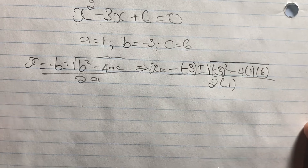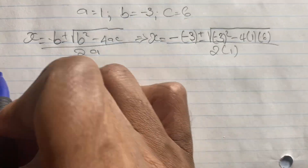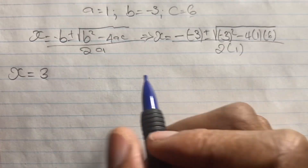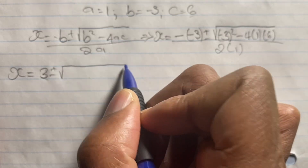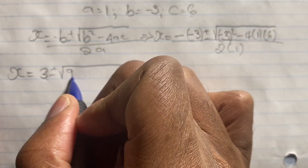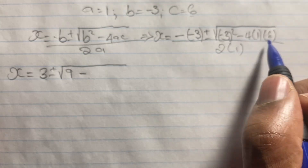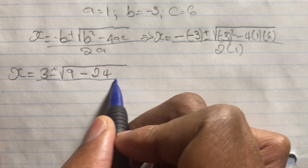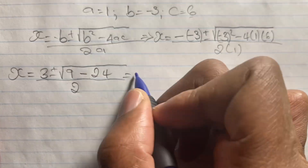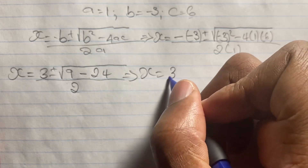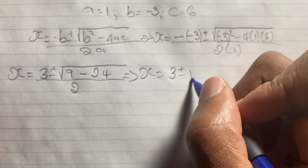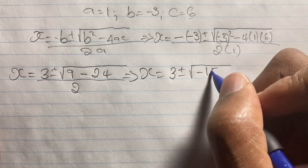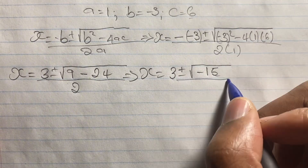Simplifying: negative of negative 3 gives positive 3. Negative 3 squared is 9, and 4 times 1 times 6 is 24. So we have x equals 3 plus or minus the square root of 9 minus 24, all over 2. Since 9 minus 24 gives negative 15, we have x equals 3 plus or minus the square root of negative 15, all over 2.